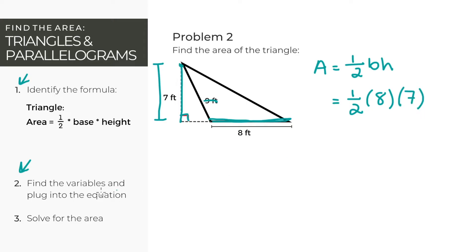For our third step, we're solving the equation. We have that the area of the triangle is 1 half times the base, which is 8 feet, times the height, which is 7 feet. Solving the equation, we get that the area is 28 feet squared.